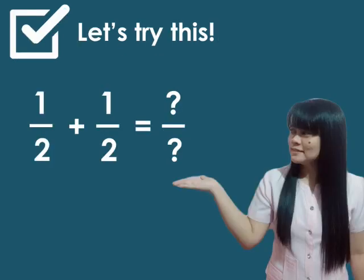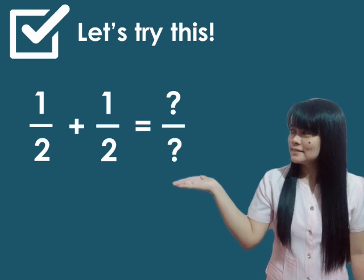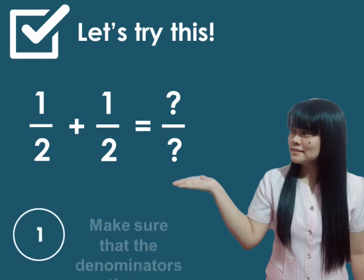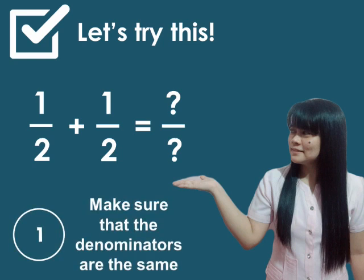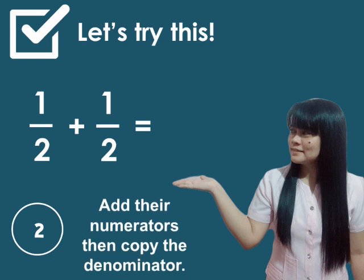Let's try this. 1 half plus 1 half is equal to? Let's try the 3 steps. Step number 1. Make sure that the denominators are the same. Step number 2. Add the numerators, then copy the denominator. 1 plus 1 is equal to 2, then copy the denominator, which is 2.